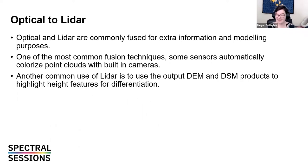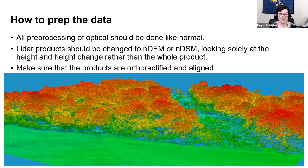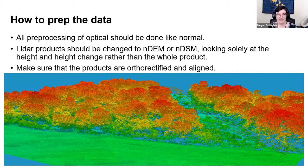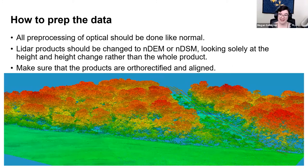How to prep this data: for optical data, use all the normal pre-processing discussed previously. LiDAR products should usually be changed to nDEM or nDSM when comparing to optical or other sensors — when looking at specific features, we want to look solely at the height or height change rather than the whole product. Make sure your products are orthorectified and aligned.